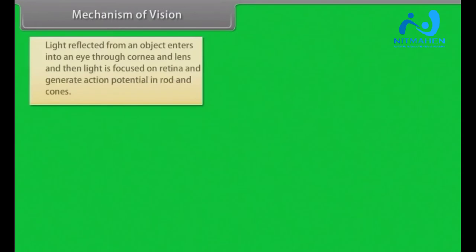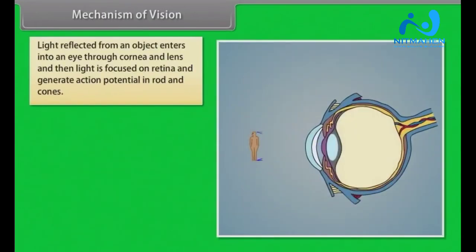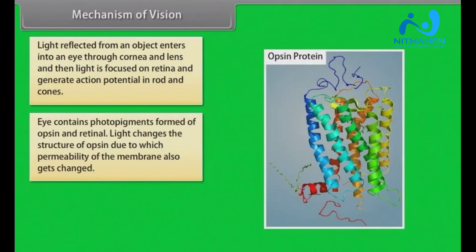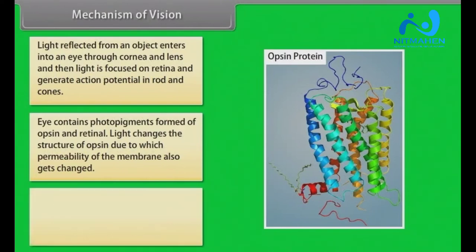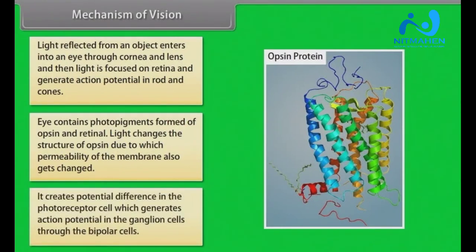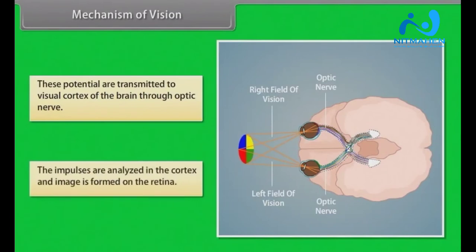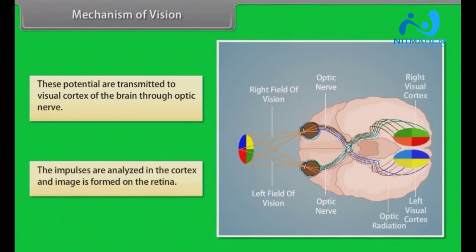Light reflected from an object enters the eye through the cornea and lens and is focused on the retina, generating action potentials in rods and cones. The eye contains photopigments formed of opsin and retinal. Light changes the structure of opsin, altering membrane permeability and creating a potential difference in the photoreceptor cell. This generates action potentials in the ganglion cells, which are transmitted through bipolar cells to the visual cortex of the brain via the optic nerve. The impulses are analysed in the cortex and an image is formed.